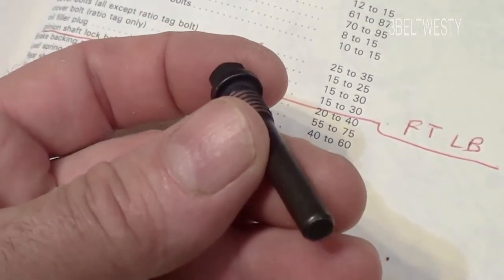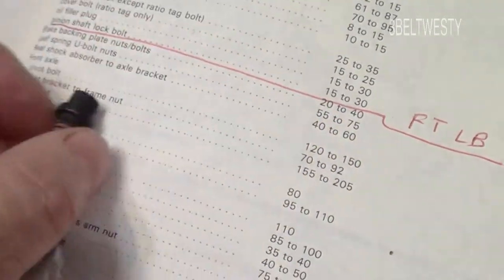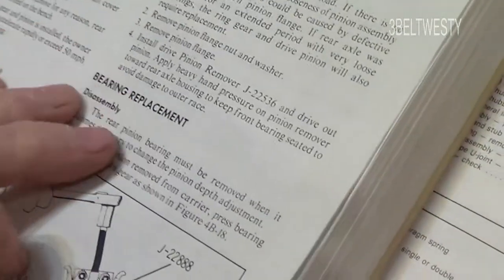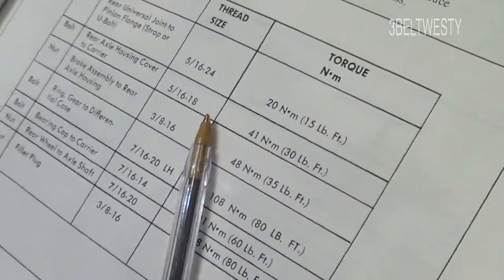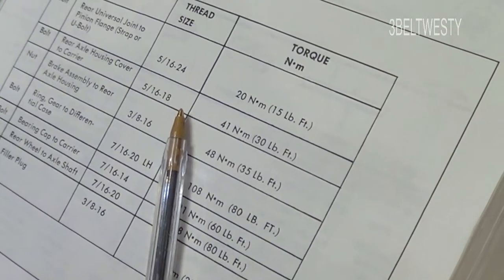Okay, I want to see what the specs are on tightening the pinion shaft lock bolt. Over here in a Camaro 83 GM manual, they don't state it here in the specs in the back.